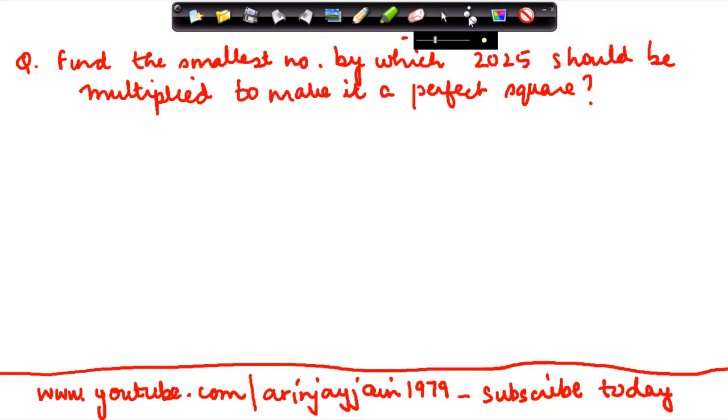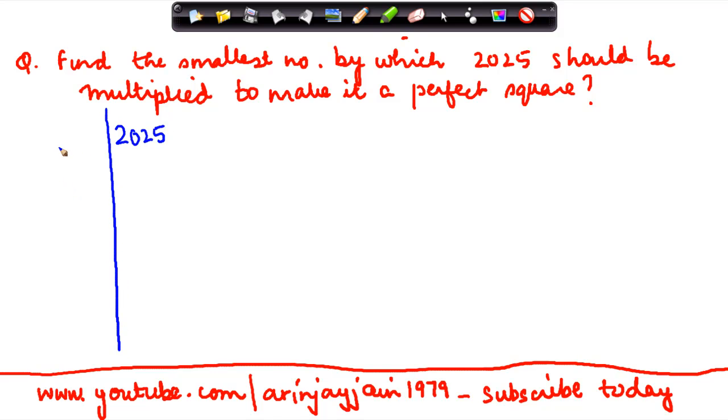Now this is a situation where you have basically a number which is 2025. We have been told that this is not a perfect square, meaning that it doesn't have a square root.